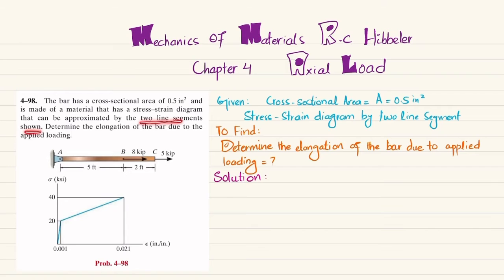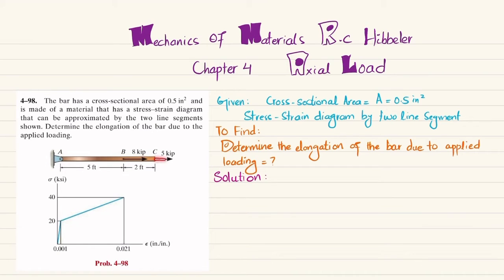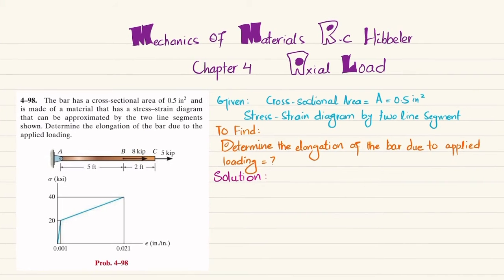Determine the elongation of the bar due to the applied loading. You can see the bar where at point C we have a 5 kips load and at point B we have an 8 kips load. The stress-strain diagram for this bar is given by two lines, and we need to determine the total elongation of bar AC.